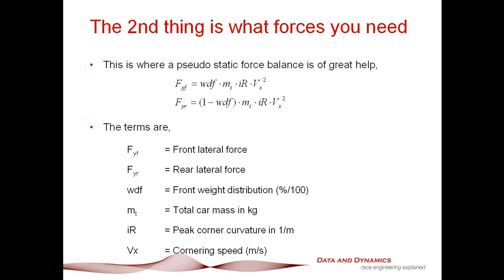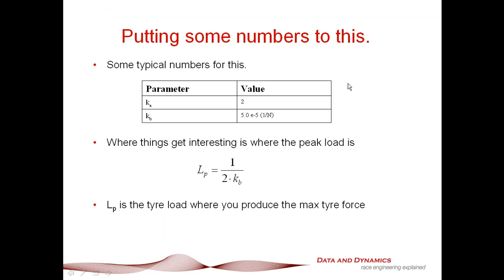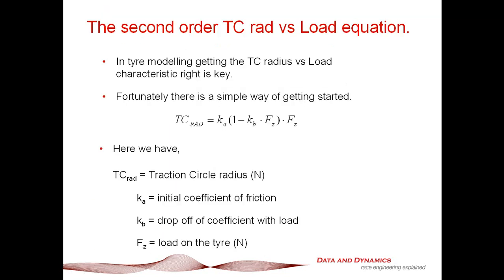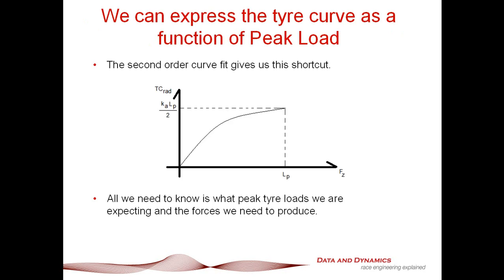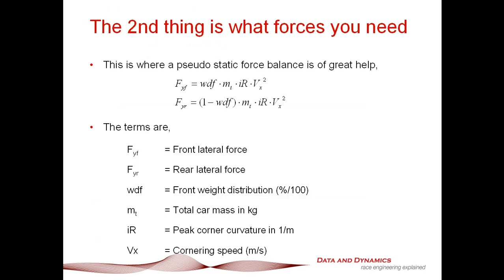Once we know that, we then need to determine the forces that we need. Now, the great thing about this is that is just simply a simple static force balance. So, what we've got here is that the total front lateral force is the front weight distribution times mt, times the peak curvature for that particular corner times the velocity at which that corner speed actually happens. And the rear is exactly the same thing except this time it's 1 minus the weight distribution. Now, the key thing is what we're doing is we're taking this equation here and we're equating it to this little puppy here where fz is the inside and outside load of the tire. That is really, really key because, effectively, it gives us a force balance.